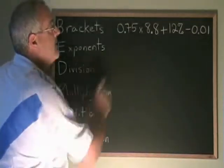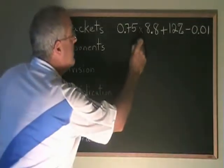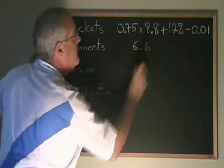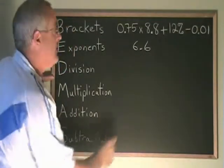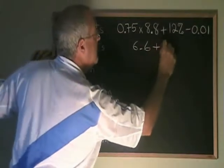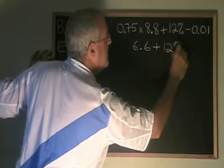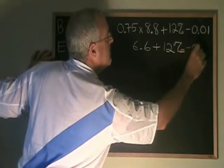0.75 times 8.8 is equal to 6.6. And then we copy down the rest of the problem: plus 12 percent minus 0.01.